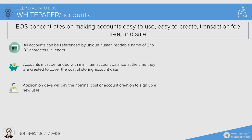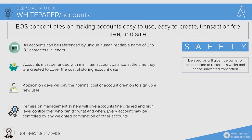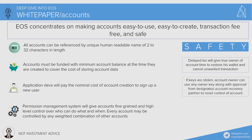Application developers will pay the nominal cost of account creation to sign up new users — like a business acquiring customers through advertising. The permission management system gives accounts fine-grained and high-level control over who can do what and when. Every account may be controlled by a combination of other accounts — for example, you can have one family account usable by any family member. EOS also protects accounts through delayed transactions: if someone tries to send tokens from your account, you receive an email notification that, for example, tomorrow your money will be transferred, giving the true owner time to restore their wallet and cancel the unwanted transaction. If keys are stolen, the account owner can use any other key along with approval from a designated account recovery partner to reset control.